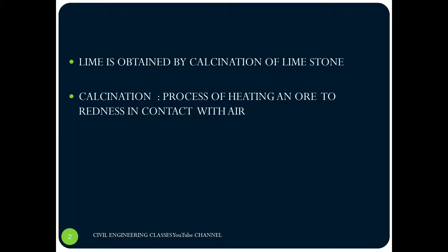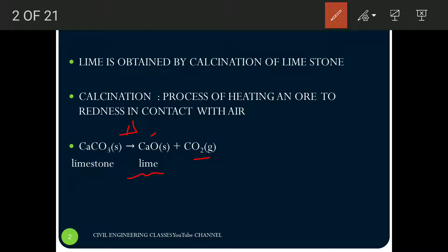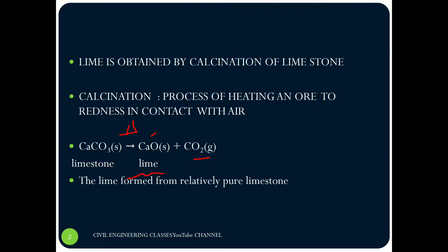As an equation, we can say that calcium carbonate — that is the limestone — when heated, gets converted into calcium oxide, that is lime, and carbon dioxide. This is the chemical equation for calcination: CaCO3 → CaO + CO2. The lime which is formed from relatively pure limestone...